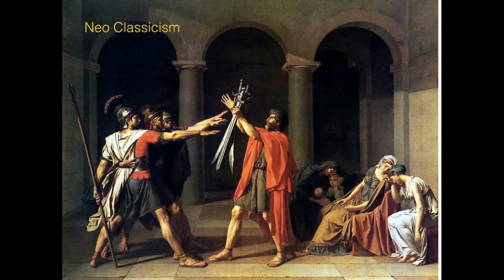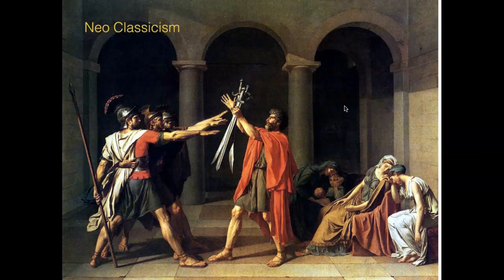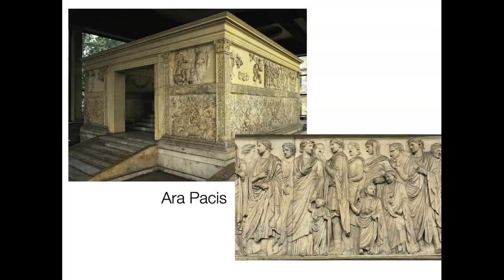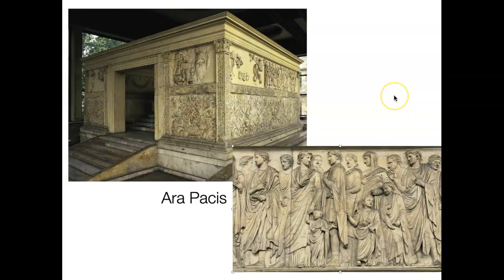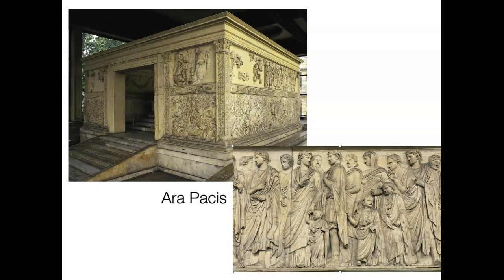Neoclassicist artists prefer well-delineated form, very clear light and clear drawing that you can see here. They prefer modeling and shading. You can almost see that these figures look like they could have been Roman or Greek sculptures — he's painting them as if literally dressing nude forms. I wanted to show this object, the Ara Pacis, that would have been in Rome. Neoclassical artists would have gone on a tour for their training, looking very carefully at many Roman and Greek objects and getting information about architectural details as well.